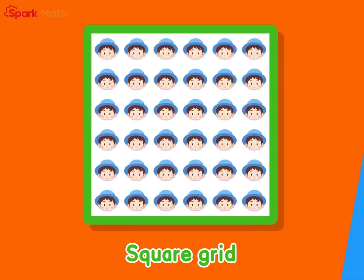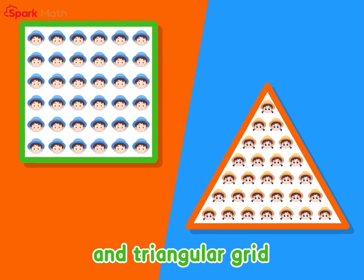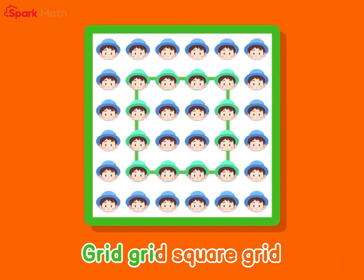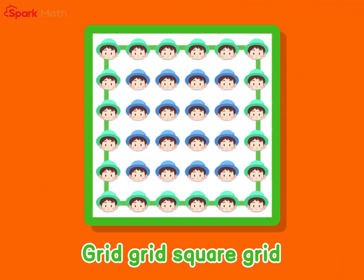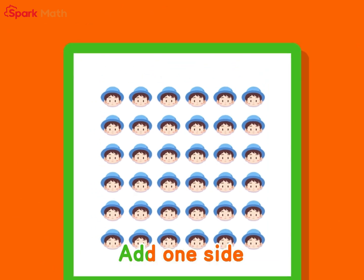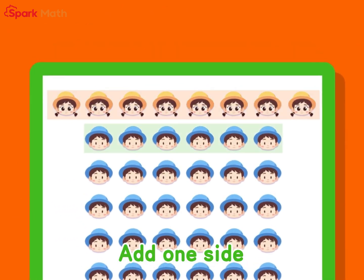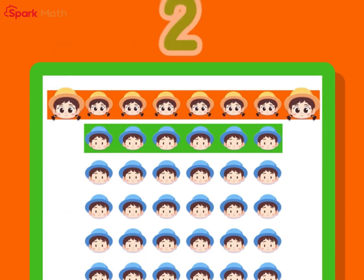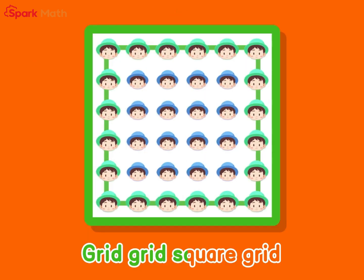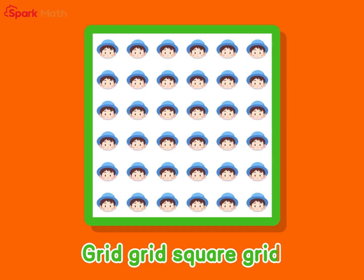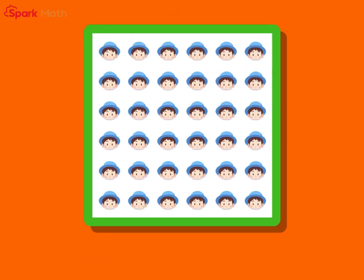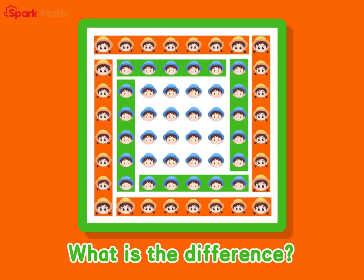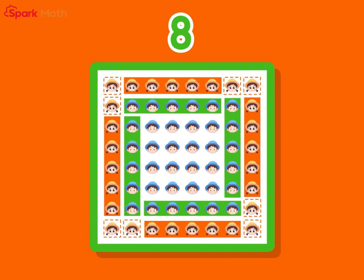For square numbers: add one sign — what is the difference? Two. Add one layer — what is the difference? Eight.